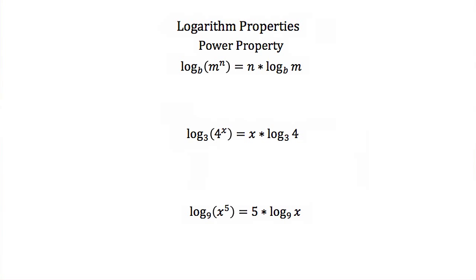The last logarithm property we're going to discuss is the power property. This occurs when we're taking the log of a number with an exponent — here we have the log of m to the n power. If you have an exponent on the number you're taking the log of, you can pull that exponent out front of your log sign and multiply the log of m by that exponent. So the log of m to the n power equals n times the log of m.